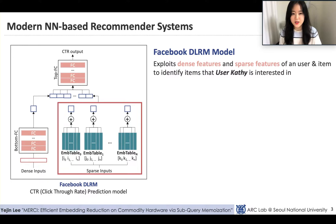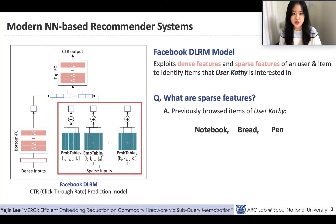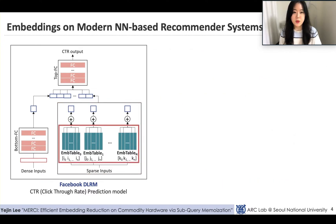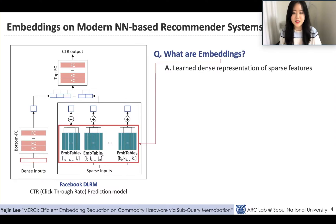There exist various types of sparse features, but one easy-to-understand example is the user's browsing history. Say that the user Kathy previously browsed pages for a notebook, bread, and pen. One way to represent this information is to use a multi-hot vector like this. However, the main issue is that this representation is extremely sparse, which is often very difficult to process.